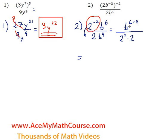Ok, so 6 minus 4 is 2. So that's just b squared, all over 2 squared is 4, 4 times 2 is 8. So we have b squared over 8. That's it. Fully simplified.